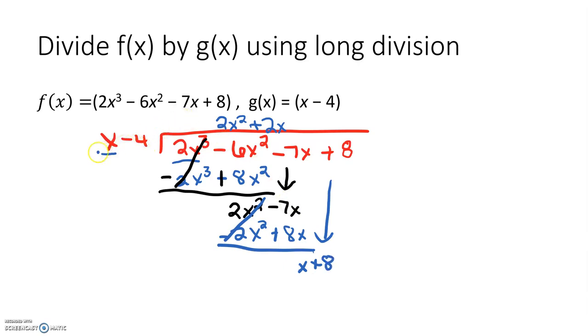And I ask myself, what times X would give me X? Well that's simply going to be 1. So I put plus 1. 1 times X is 1X and 1 times negative 4 is negative 4. Draw your line and change both signs. X minus X has to cancel or be eliminated and 8 plus 4 is 12. I no longer have a variable term, or if I did have a variable it would be lower than the degree of my divisor. So this is now my remainder.